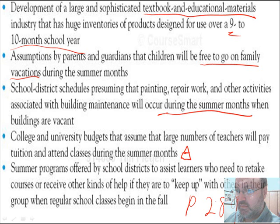And the last one, from page 289: summer programs offered by school districts to assist learners who need to retake courses or receive other kinds of help if they are to keep up with regular school classes beginning in the fall — that infamous summer school. What would happen to summer school if we had year-round schools? You see how archaic some of these things are? This is making a case for technology supporting and overcoming each one of these archaic reasons why we don't have year-round school.